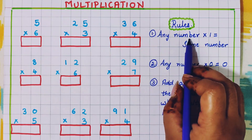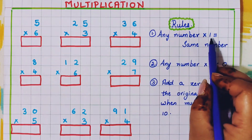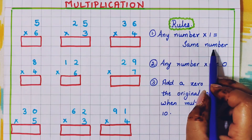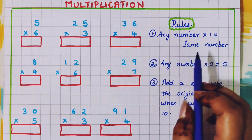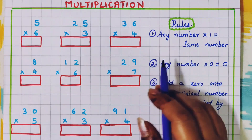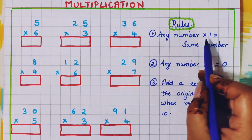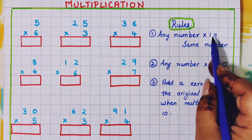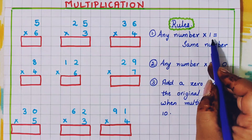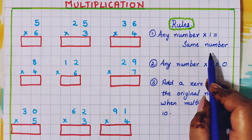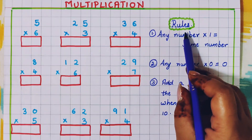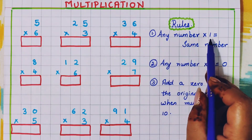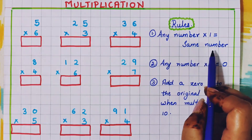Any number, when we multiply it by 1, the answer will be the number itself. If I multiply 2 into 1, the answer will be 2 itself. If I multiply 20 into 1, the answer will be 20 itself. So this is the first rule of multiplication: any number multiplied by 1 is the same number.